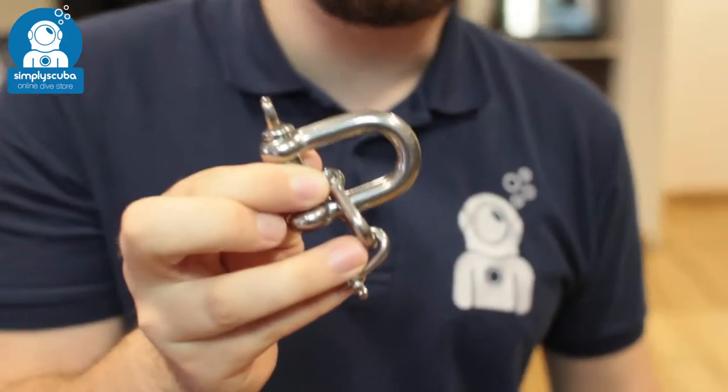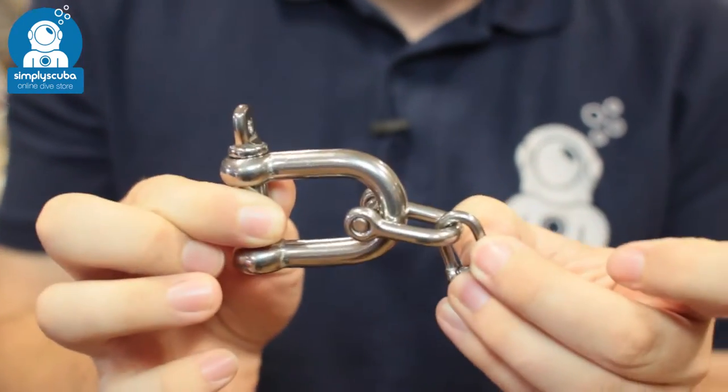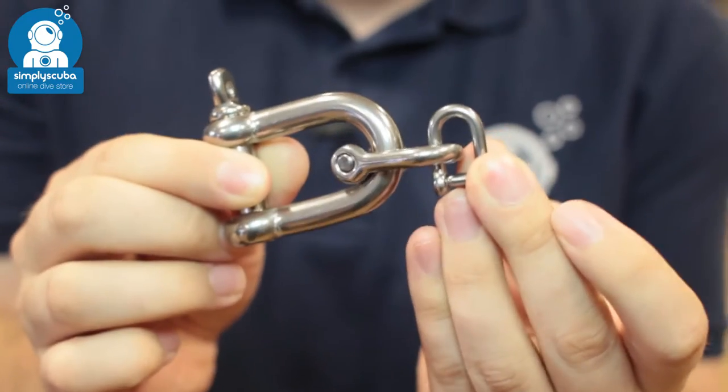Hi, welcome to Simply Scuba. Here we have the Blue Orb Shackles. These come in three different sizes. We've got the largest on this side and then down to the smallest.